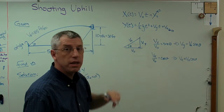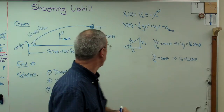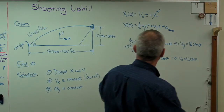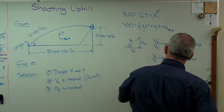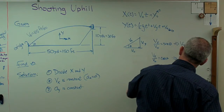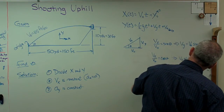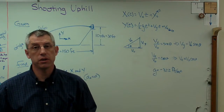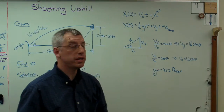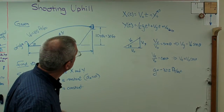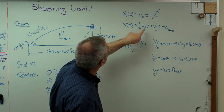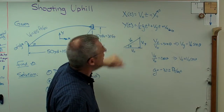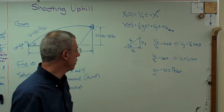Now g — it's worth saying that since I've decided y is positive upward, g is going to be minus 32.2 feet per second squared. That minus sign is important; I've got to make sure gravity is pointed in the right direction. So I know everything in the equations except t and theta.